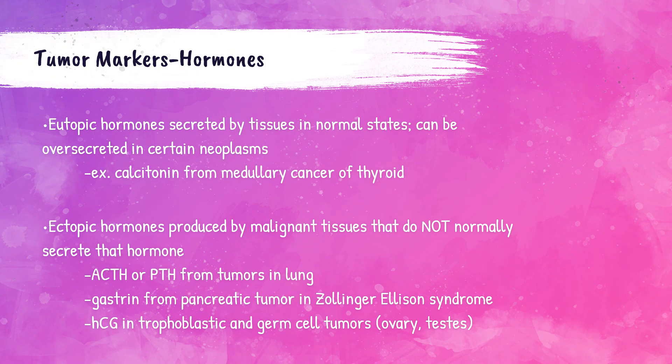Hormones can also be used as tumor markers. There are eutopic hormones and ectopic hormones. Eutopic hormones are those that are secreted by tissues in normal states within the body; they can be used as tumor markers because in certain cancers they can be over-secreted. An example is calcitonin, a normal hormone produced by the C cells in the thyroid gland. In medullary thyroid cancer — cancer of the C cells of the thyroid — calcitonin is secreted in greater quantities, making it a eutopic hormone tumor marker.